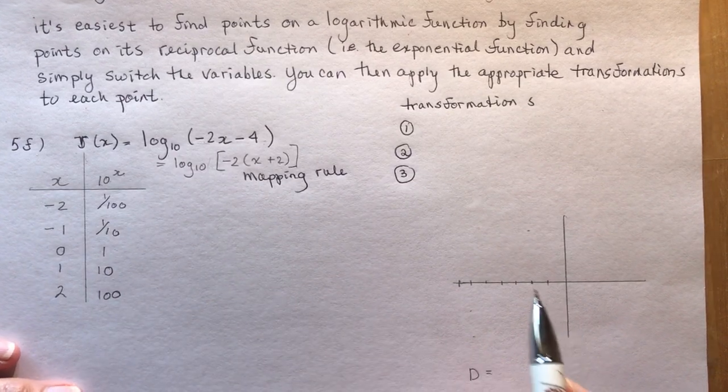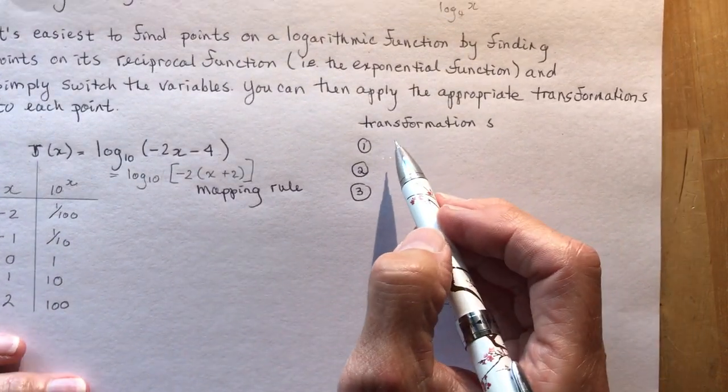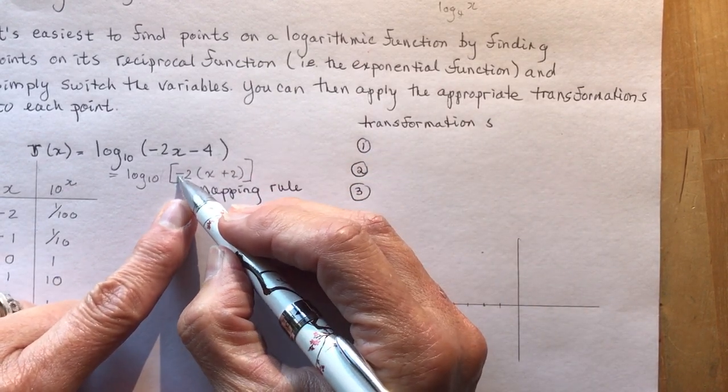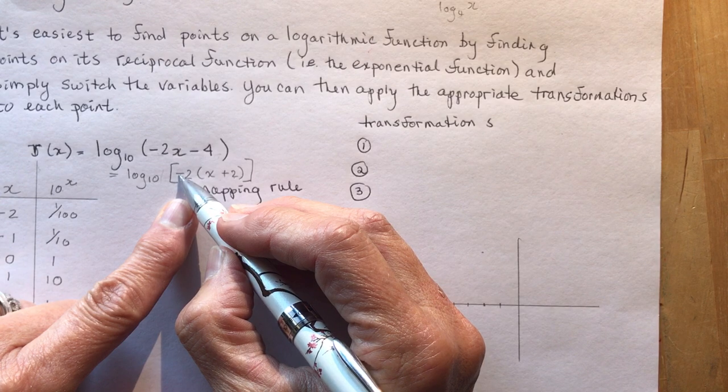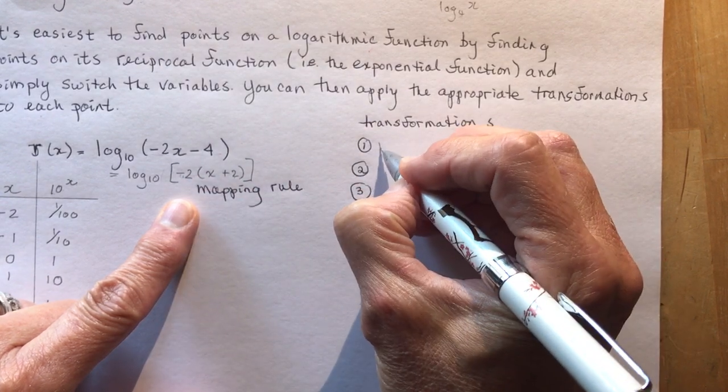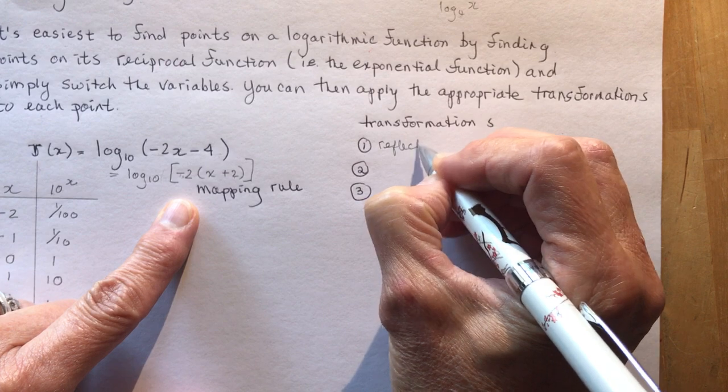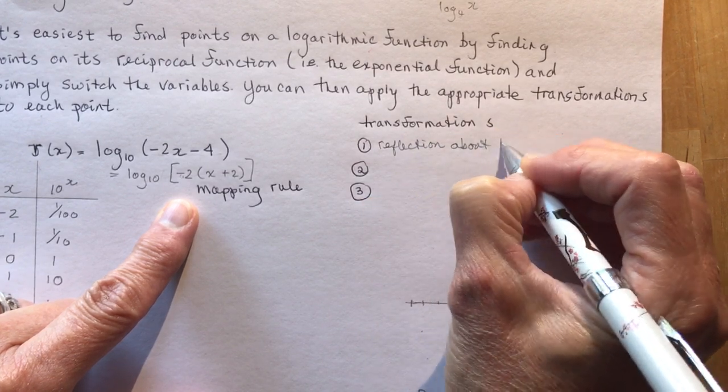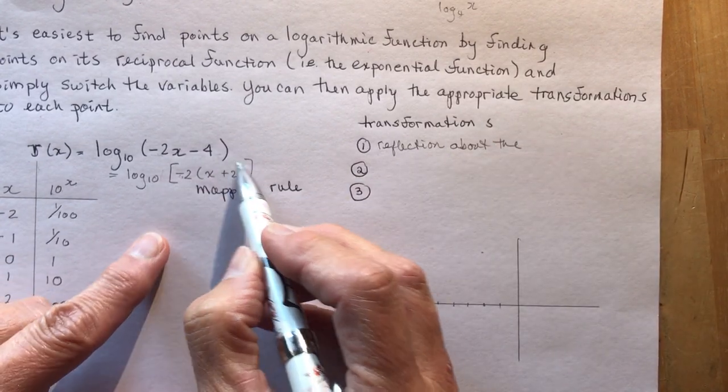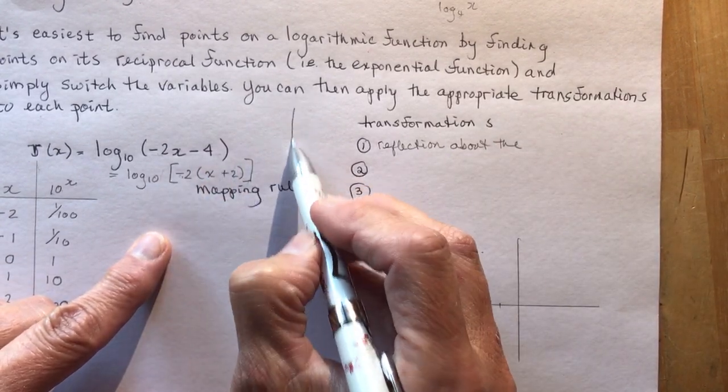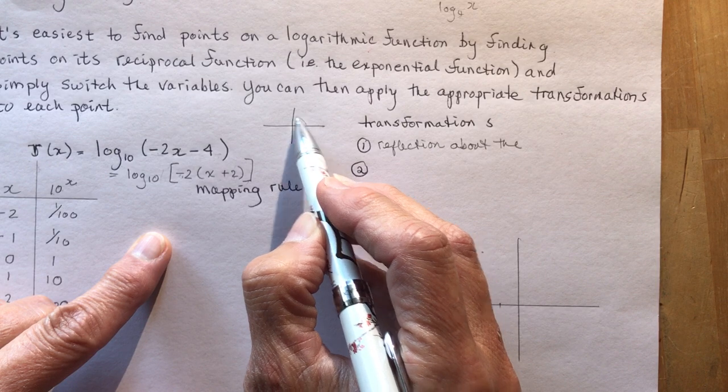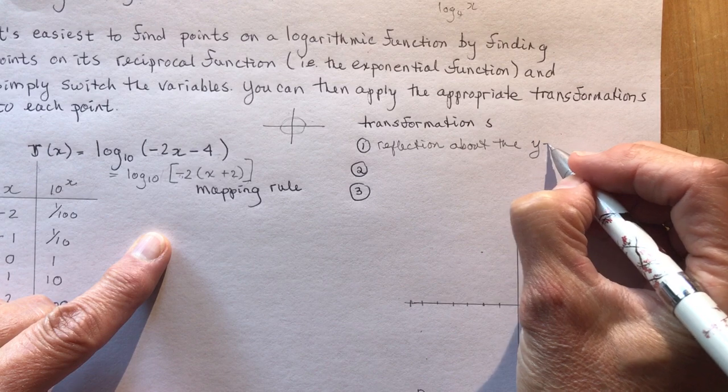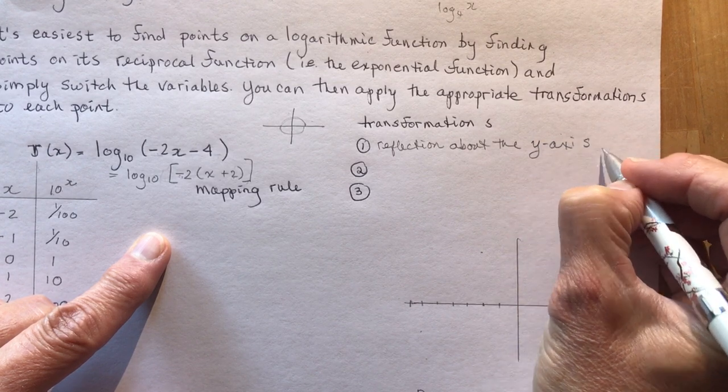So the mapping rule, let's do the transformations first. What kind of transformations do I have here? So I have a negative sign here. So the negative means a reflection about the, now you have to figure out what axis it is. So anything in the brackets is a change to X. So if I'm flipping X's, I'm flipping about the Y axis. So reflection about the Y axis.